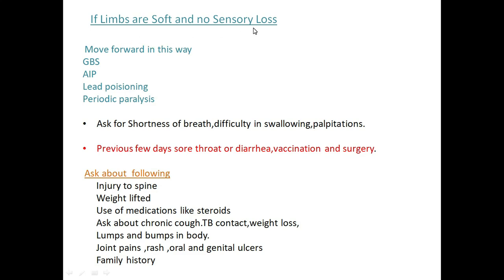If you feel the limbs are soft with no sensory loss, consider GBS, porphyria, lead poisoning, and periodic paralysis. For lead poisoning, we have already asked about occupation. For periodic paralysis, we asked initially in the intermittency section whether there is any history of weakness in the past.